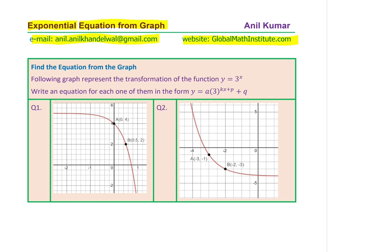We'll consider two examples here. You need to find the equation from the graph of the given exponential function. The question is: the following graphs represent the transformation of the function y equals 3 to the power of x. So we have the parent function 3 to the power of x. Write an equation for each in the form y equals a times 3 to the power of kx plus p, plus q. That becomes the transformed equation you need to write for these two given graphs. I'd like you to pause the video, copy this question, and then answer.